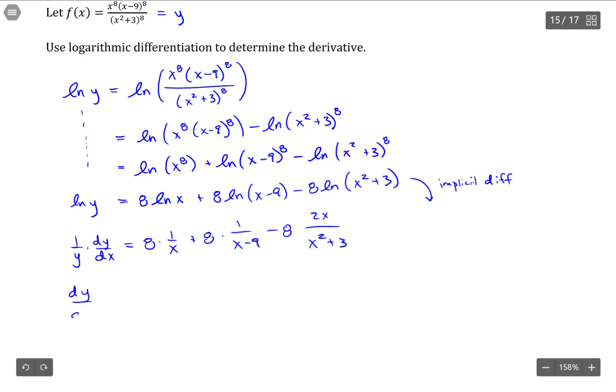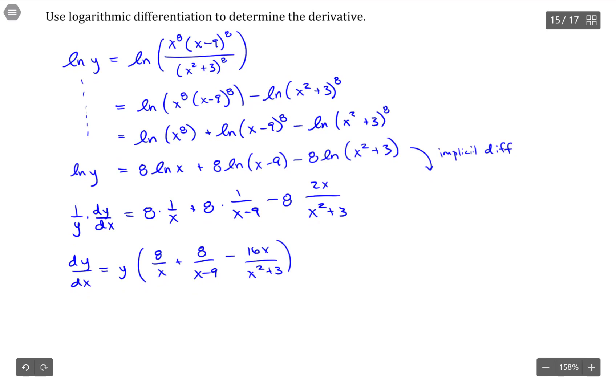So, we have now dy dx equals y times 8 over x plus 8 over x minus 9 minus 16x over x squared plus 3. And, we're almost done. We could leave y in here, as long as we evaluate any derivatives using both the x and y value of the point.